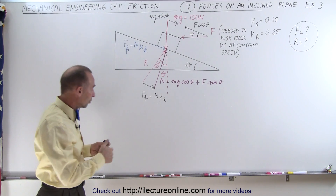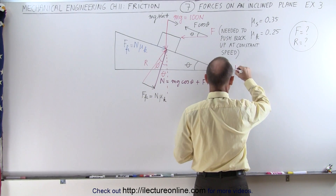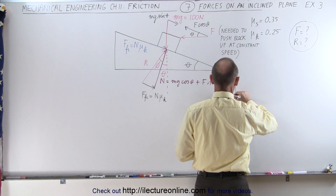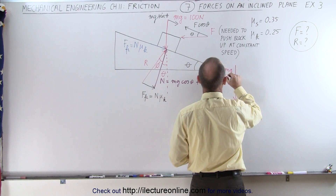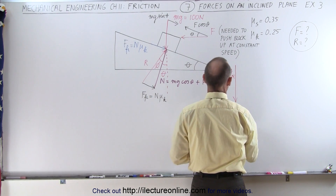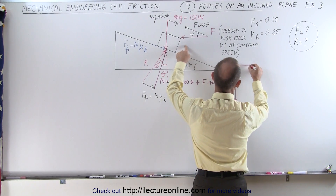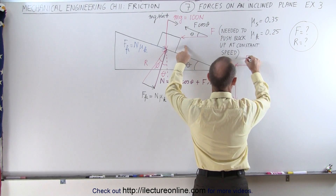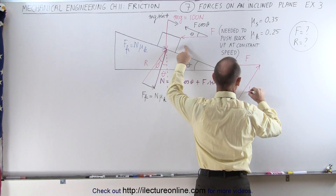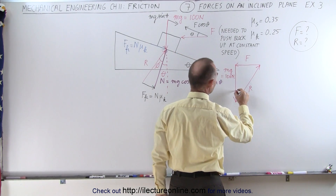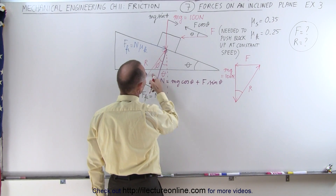The easiest way would be to draw a triangle. We're going to draw a triangle where we have the vertical force — that's the weight of the block, mg, which is equal to 100 newtons. Then we have the applied force F, which is one of the unknowns, and then we have the reaction force R. Notice the angle here relative to the vertical is going to be the sum of these two.